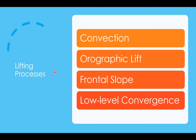What are some of the most common lifting processes in the atmosphere? We have convection, orographic lift — think about mountains — frontal slope as a lifting process, and low-level convergence or low-level converging air. We talked about low-level convergence when we went over the frontal systems training. These are the four main processes that result in some form of lifting.